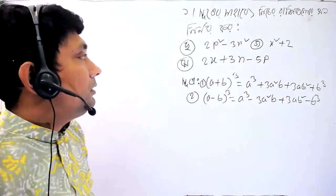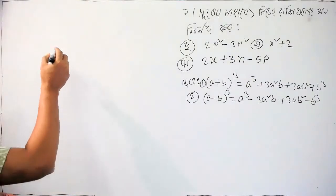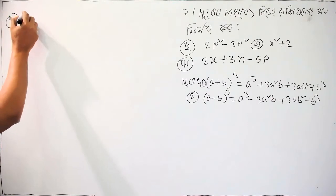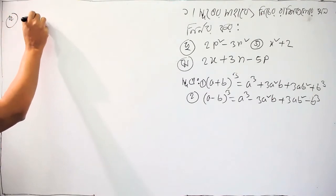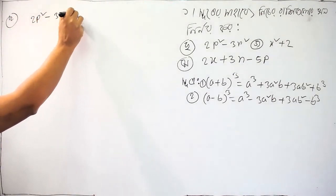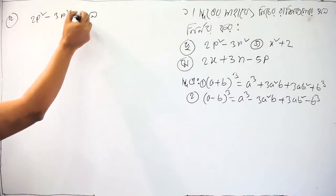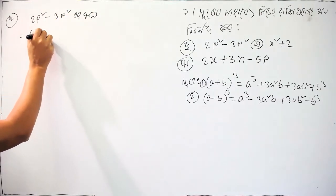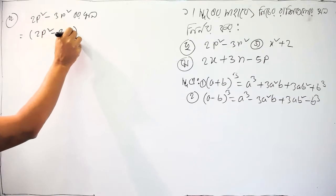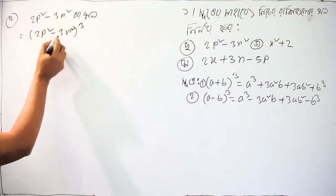Let's see what we are going to do. We are going to write 2p square minus 3r square, whole cube.